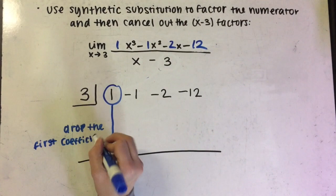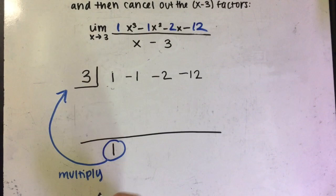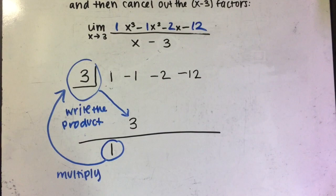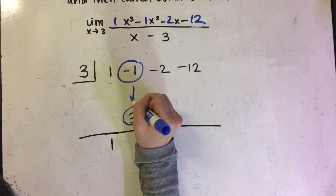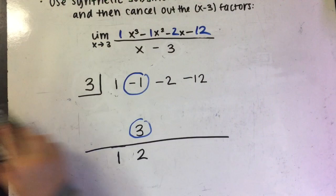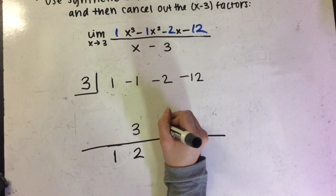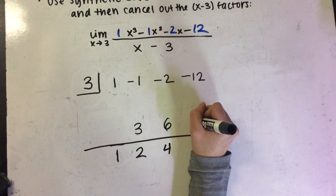From here, we take the first coefficient and drop it down. Then we take that number and multiply it with the number in the box. So here it would be 1 times 3, which equals 3. We write the product under the second coefficient. The next step is to add the numbers going down: negative 1 plus 3 equals 2, so we write 2 below. Now we just repeat the process: 2 times 3 equals 6, so we write 6 under the negative 2. Then negative 2 plus 6 equals 4. 4 times 3 equals 12. And negative 12 plus 12 equals 0.